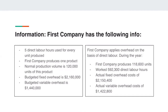First Company applies overhead on the basis of direct labor. During the year, First Company produces 118,600 units, worked 592,300 direct labor hours, actual fixed overhead cost of $2,150,400, and actual variable overhead costs of $1,422,800. It is recommended to pause the video and jot down the amounts to make it easier to follow along.